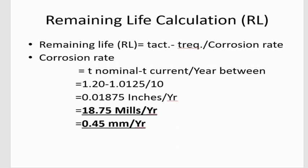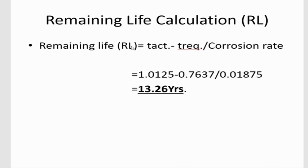The corrosion rate is 0.01875 inches per year (0.45 mm/year). The remaining life is calculated as: (t_actual − t_required) / corrosion rate = (1.0125 − 0.7637) / 0.01875, which gives a remaining life of 13.26 years. That means our vessel has a remaining life of 13.26 years.